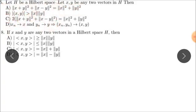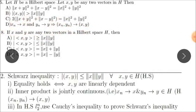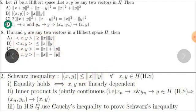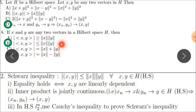The second question: the inner product is jointly continuous — this is absolutely correct, option B is true. So the correct options are: first question option D, second question option B.